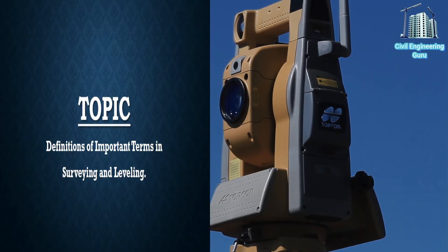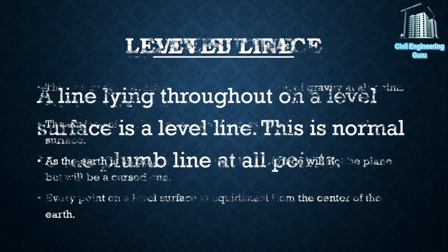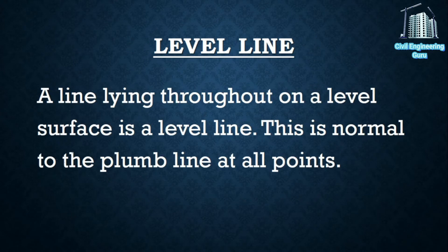Level surface: this is a surface which is normal to the direction of gravity at all points, as indicated by a plumb line. The surface of a still lake may be taken as an example of a level surface. As the earth is an oblate spheroid, a level surface will not be a plane but will be a curved one.